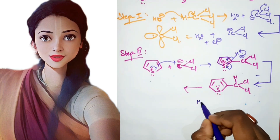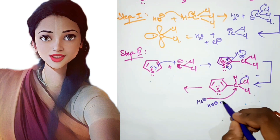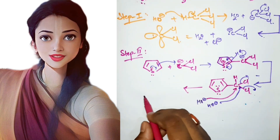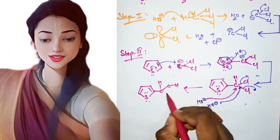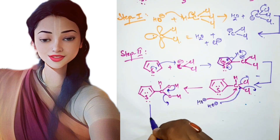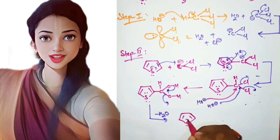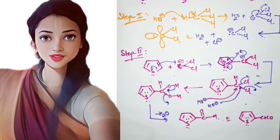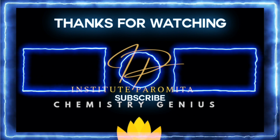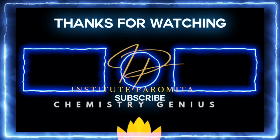Reacting with OH⁻ replaces the chlorine atoms, since chlorine is a very good leaving group and large in size. Two OH groups become attached to the intermediate. Removal of a water molecule then gives thiophene-2-carbaldehyde — an aldehyde group attached to the thiophene ring. This is your abnormal Reimer-Tiemann reaction. If you like the video, do watch other videos from the channel and subscribe. Thank you.